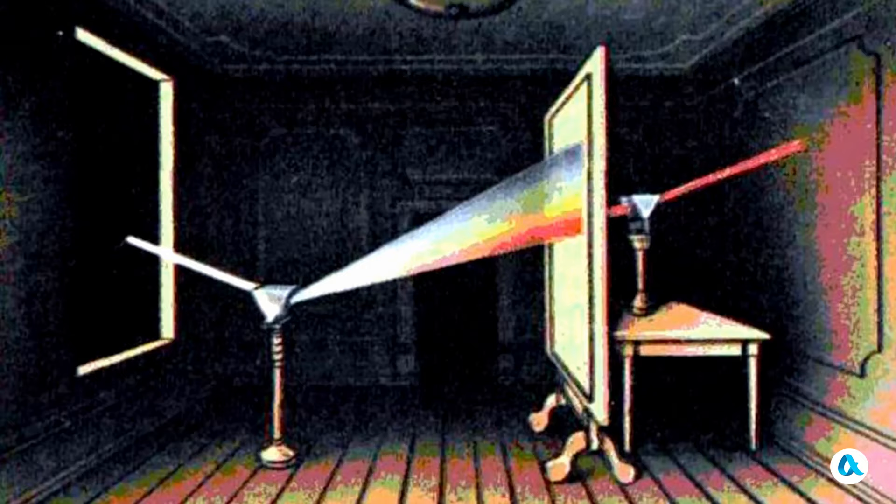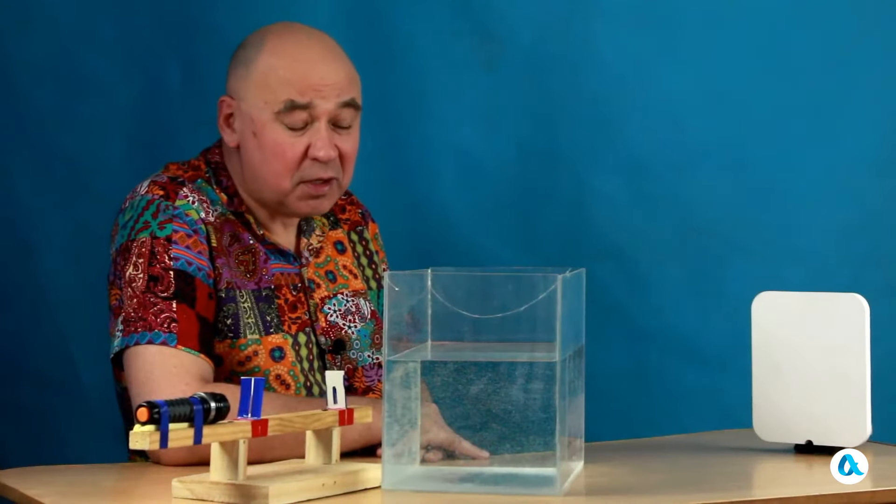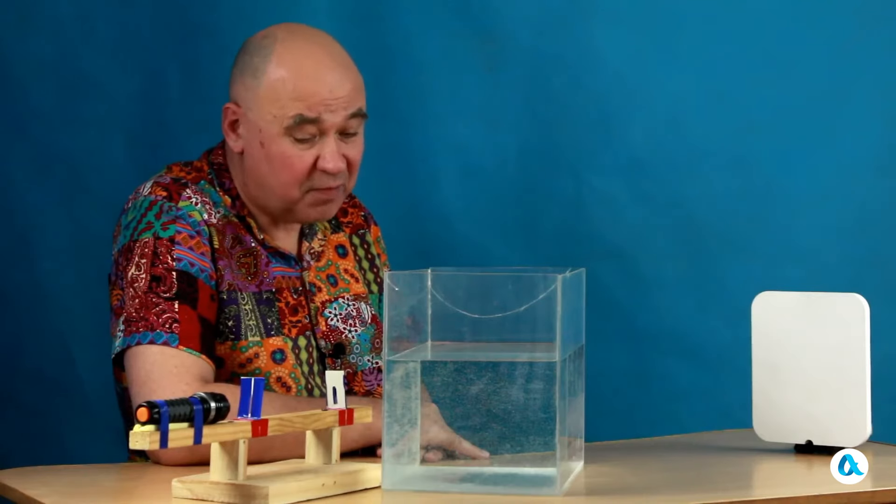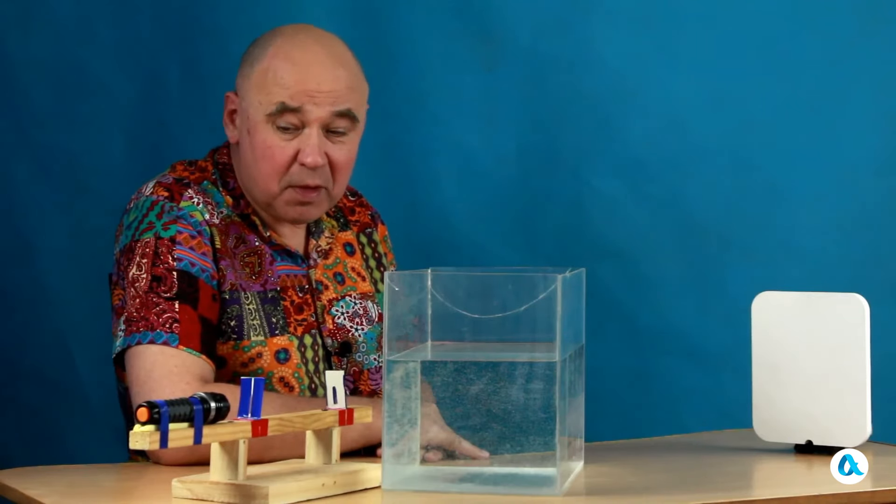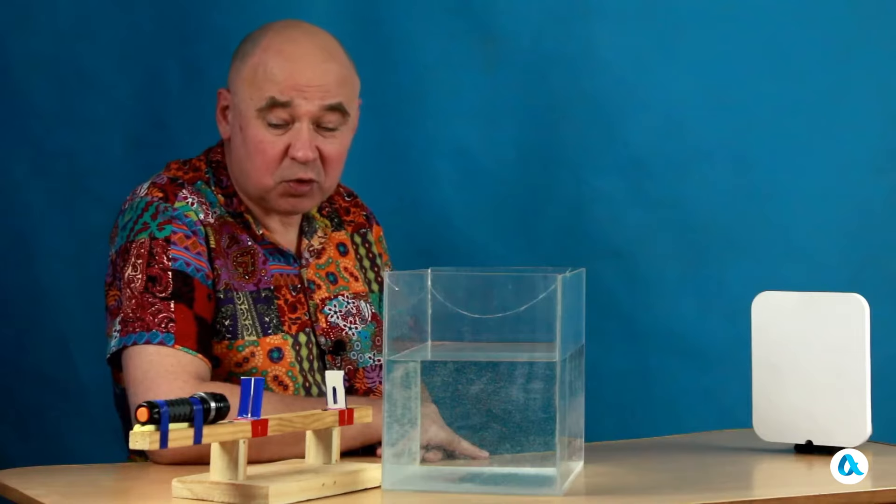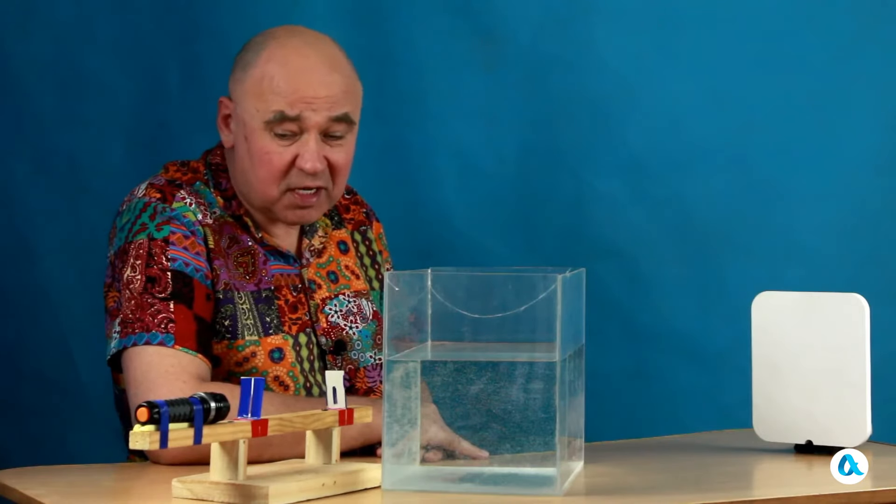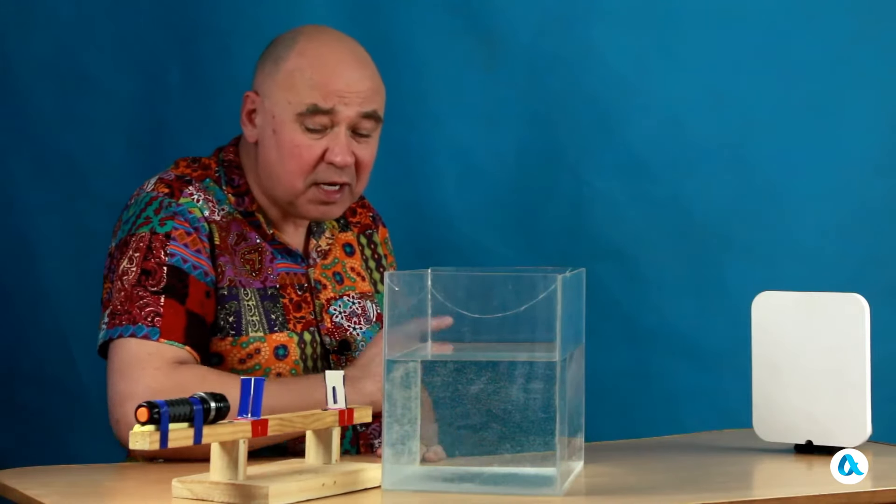They remain distinct on their own. To reproduce Newton's experiment, I will utilize an aquarium that is filled with water as a prism. This flashlight will function as the origin of white light, with two slits positioned behind it to generate a narrow beam of light.